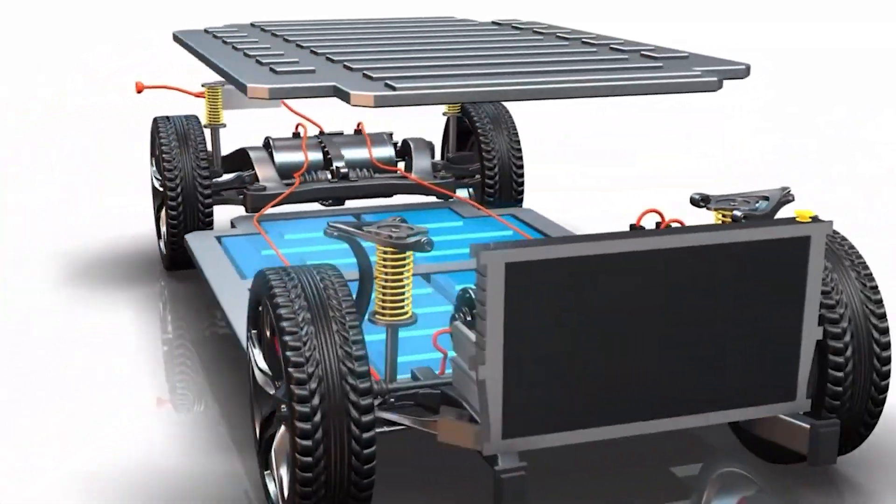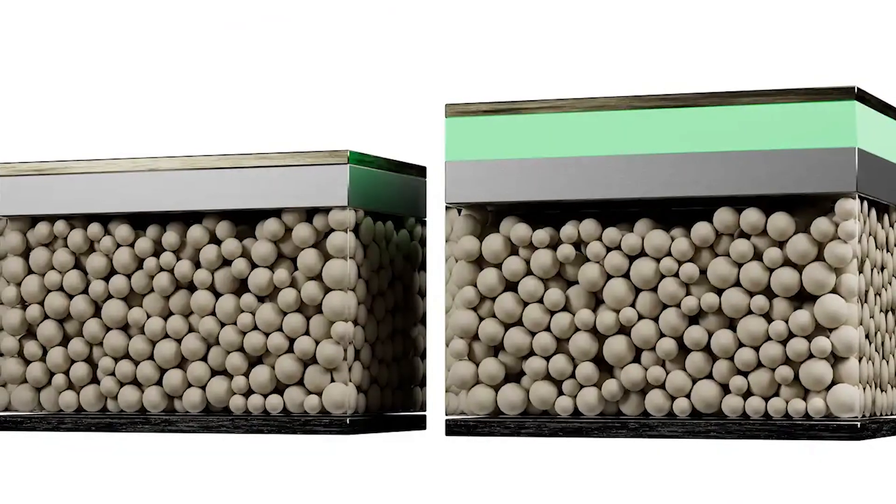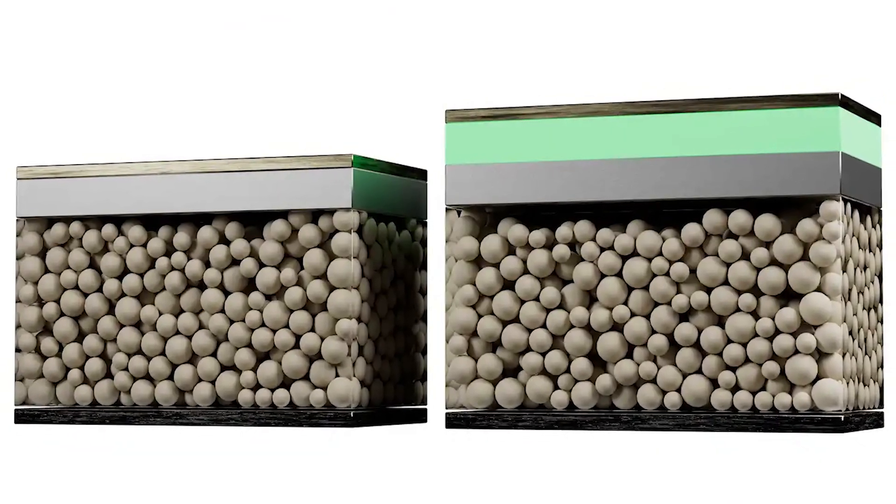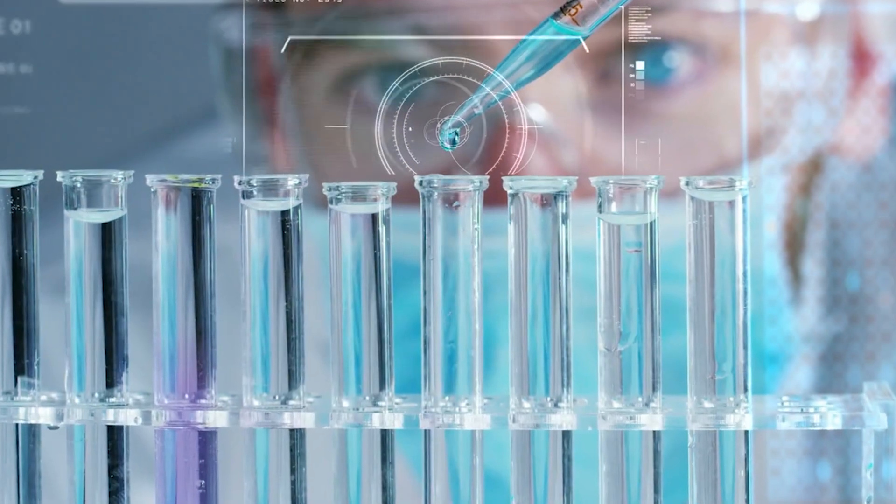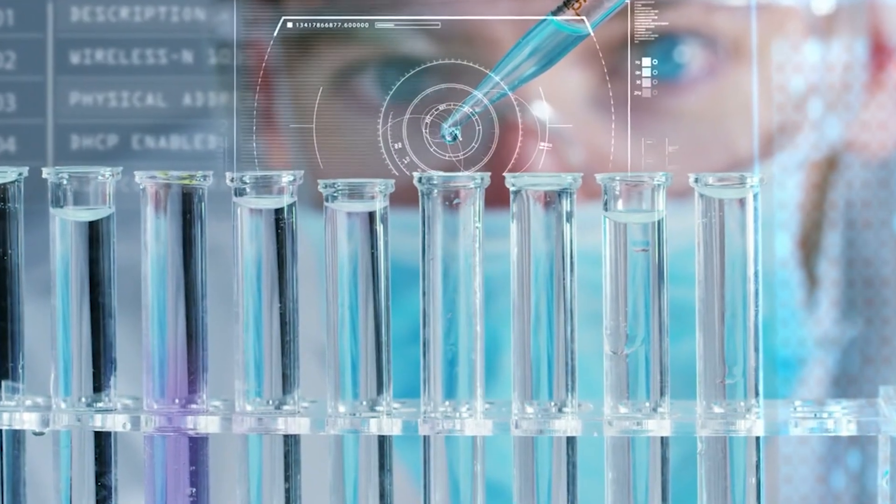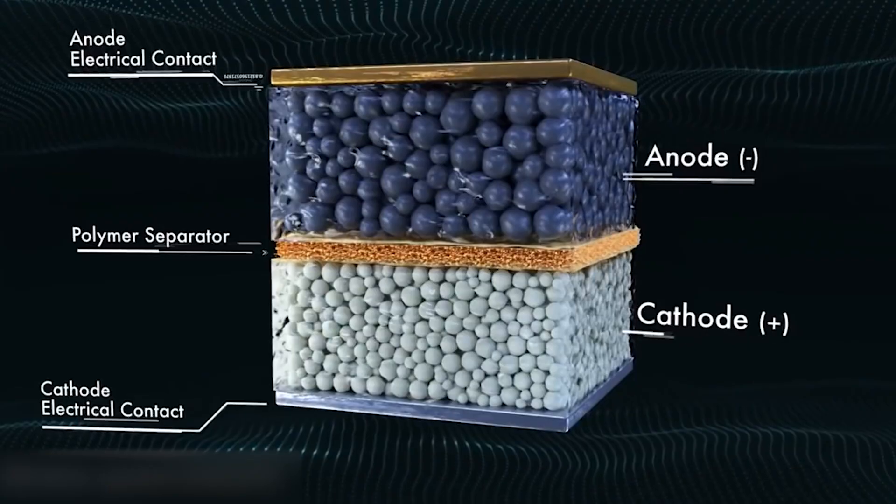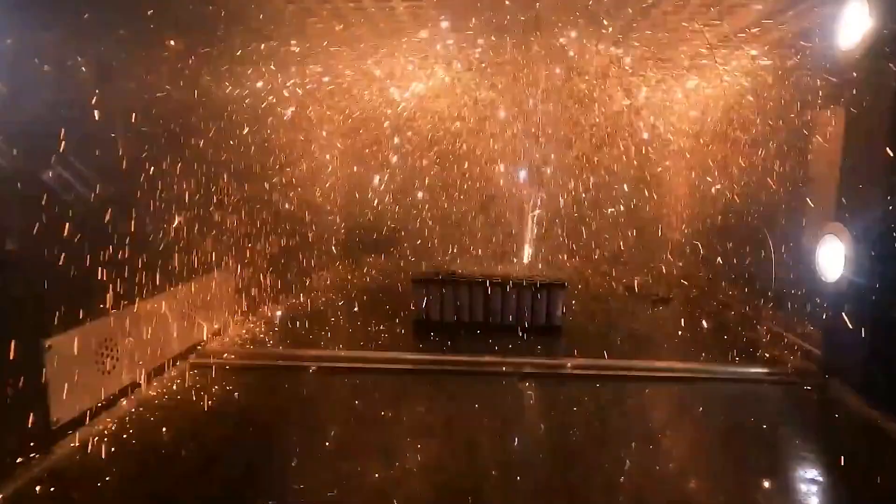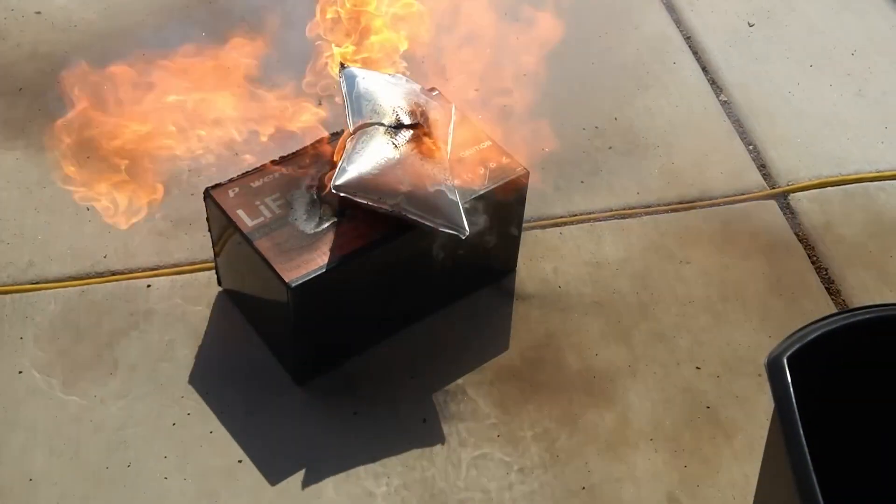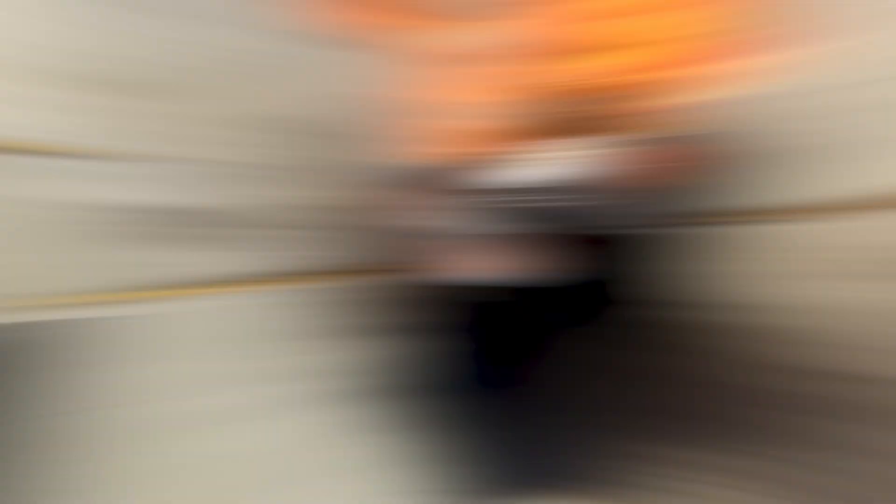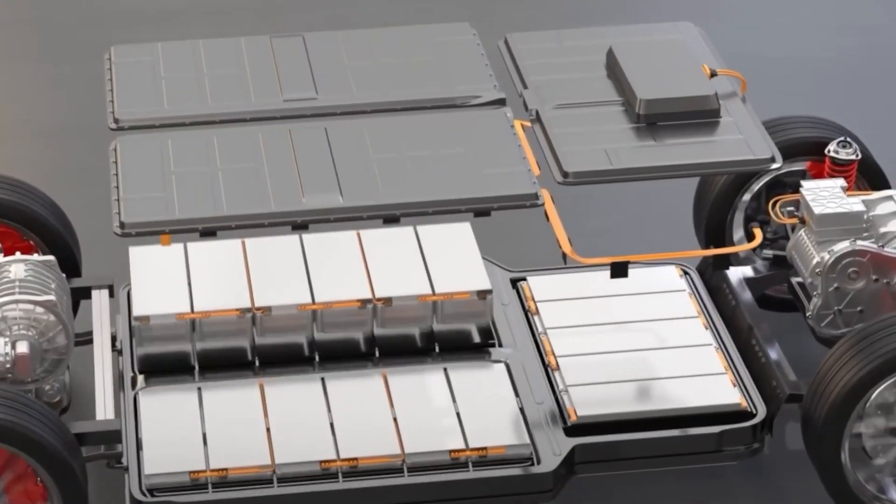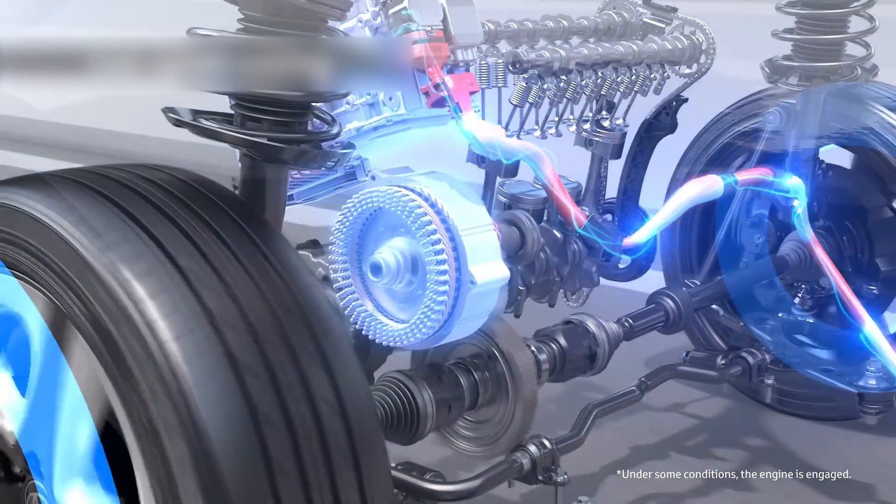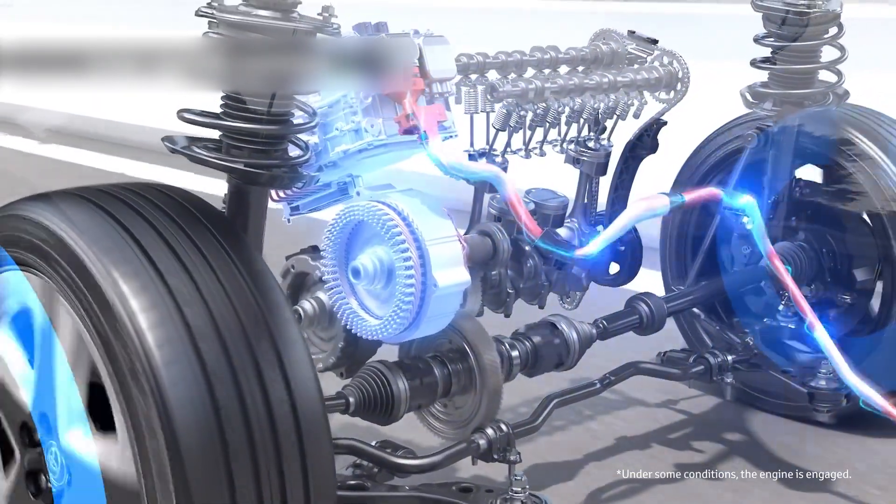It all comes down to the materials and design. Traditional lithium-ion batteries use a liquid electrolyte, a chemical solution that helps lithium ions move between the battery's anode and cathode. But this liquid has major downsides: it's flammable, making batteries prone to overheating or catching fire; it wears down over time, reducing battery life; and it limits how much energy the battery can store.